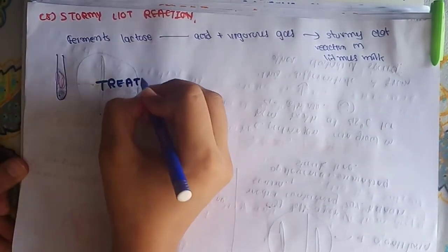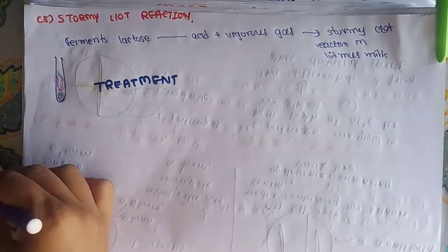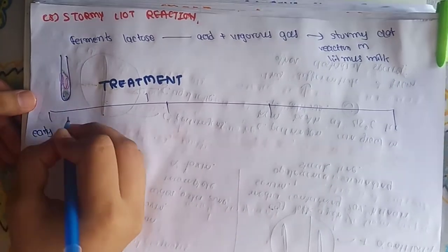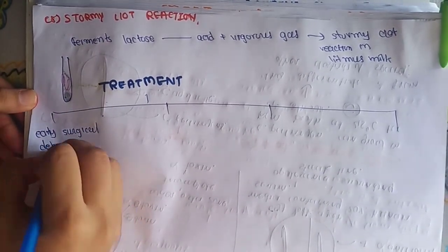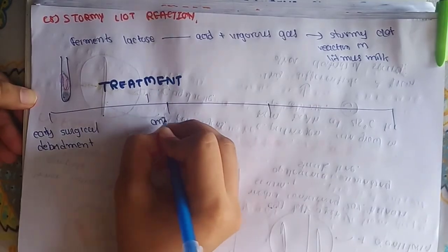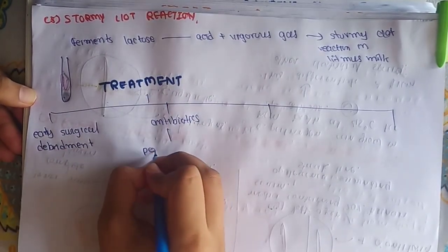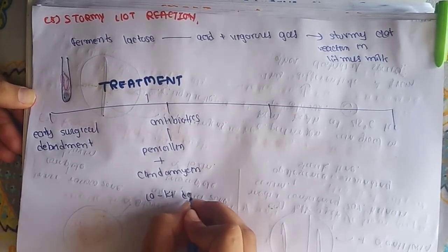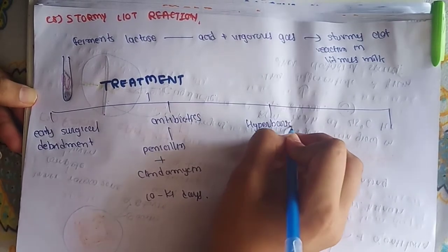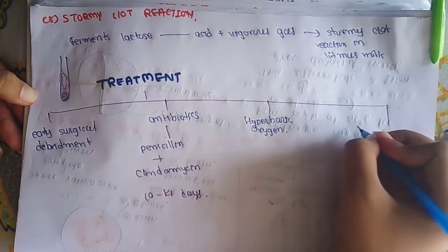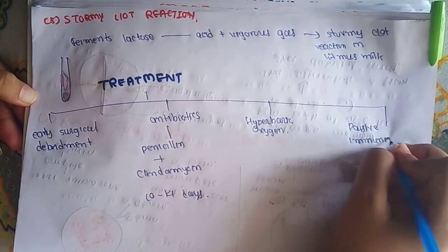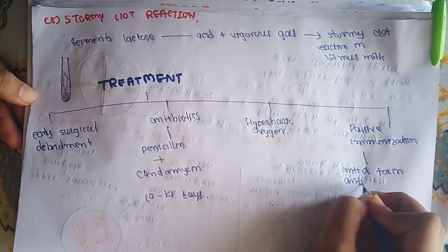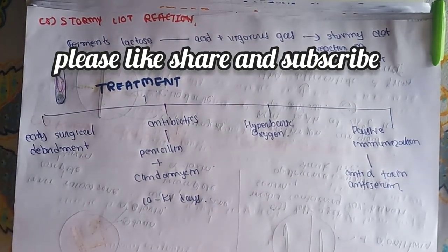Now the treatment of gas gangrene infection of Clostridium perfringens. We are mainly giving four treatments: First is early surgical debridement, it is a crucial step in management of gas gangrene. Second is antibiotics. Combination of penicillin and clindamycin is recommended for 10 to 14 days. Third is hyperbaric oxygen. As we know Clostridium perfringens is obligate anaerobic so they can kill them. And the last is special immunization with anti-alpha toxin antiserum. Thanks for watching.